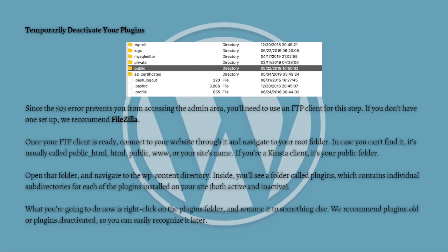Inside the wp-content directory, you'll find a folder called plugins, which contains individual subdirectories for each of the plugins installed on your site. This applies to both active and inactive plugins. What you're going to do now is right-click on the plugins folder and rename it to something else.